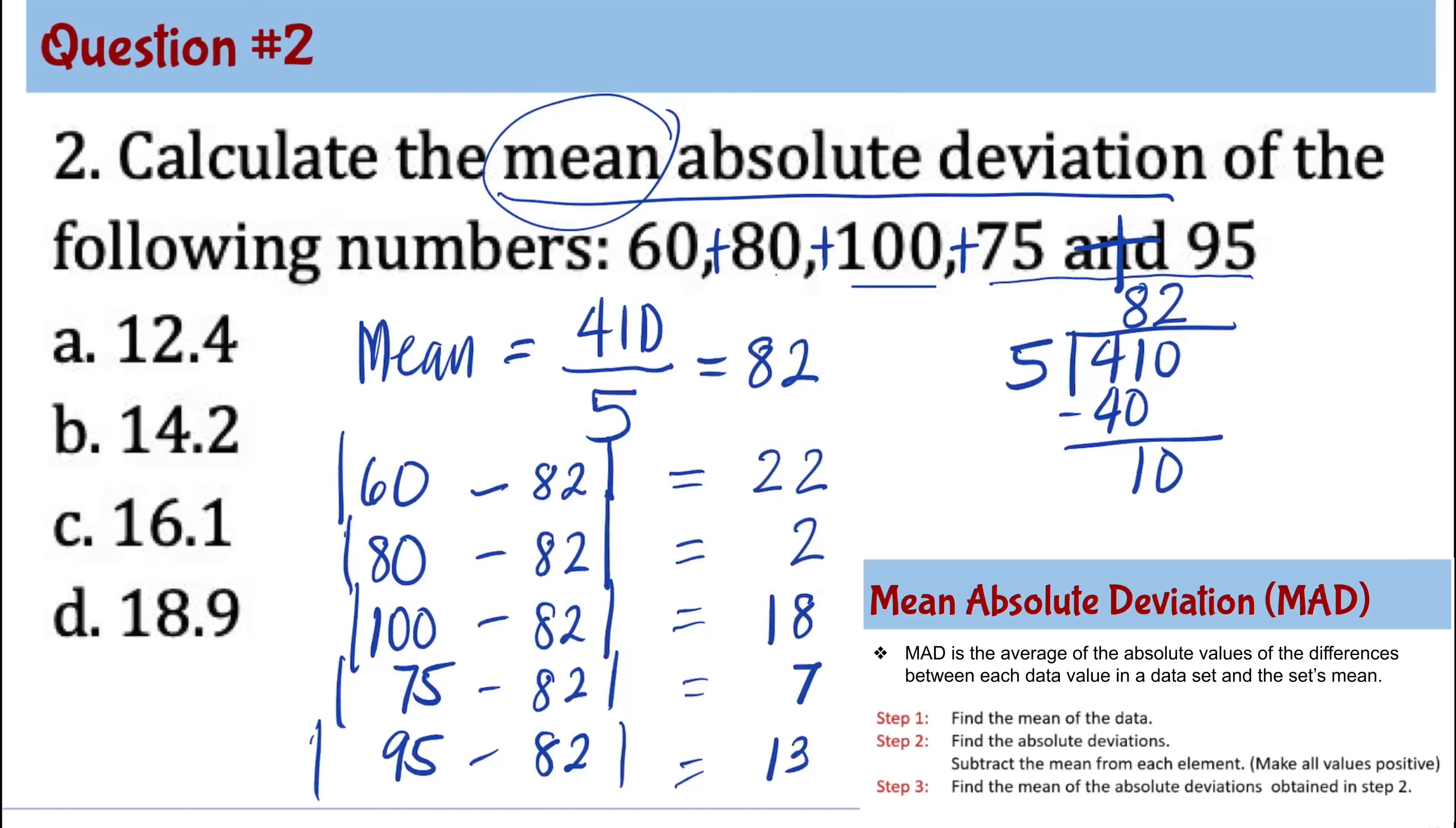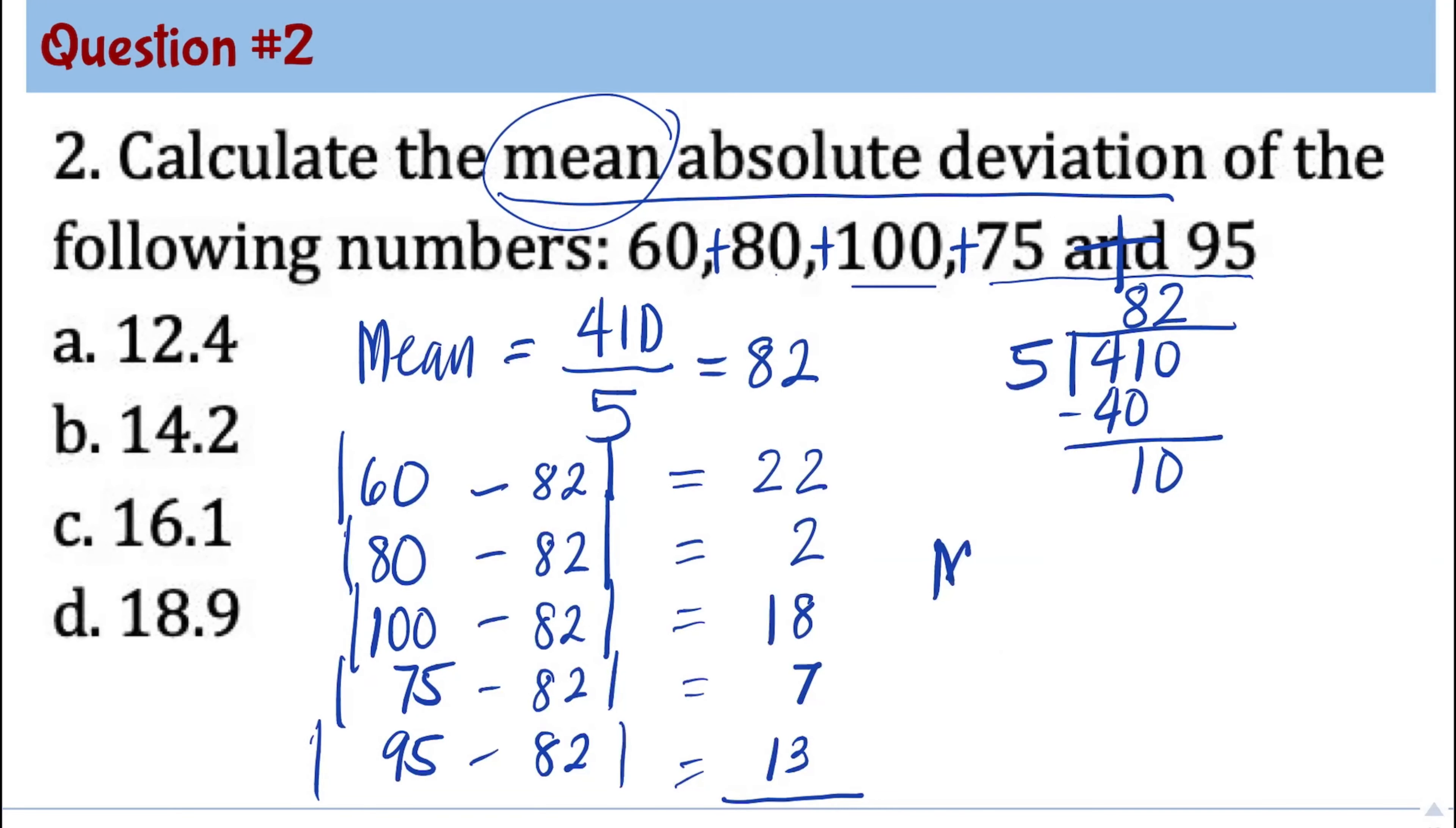And finally, the last step is to find the mean of these absolute value deviations. So to calculate for the MAD, or mean absolute deviation, we need to add 22, 2, 18, 7, 13, and then divide it by 5. So 7 plus 13 is 20. That's 20. And that's 22. So 20, 20, 22. That's 62 over 5. And changing this to mixed number, we know that 5 can go into 62 twelve times. 12 times 5 is 60. And the remainder is 2. So 12 and 2 fifths. The only thing that has a 12 is 12.4. Because 2 fifths is 0.4. So the answer for question number 2 is letter A.